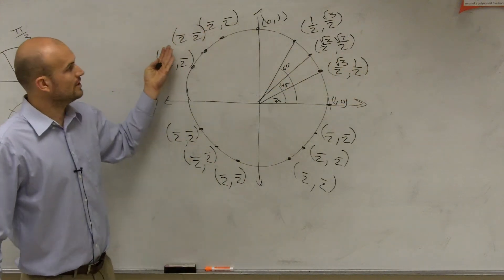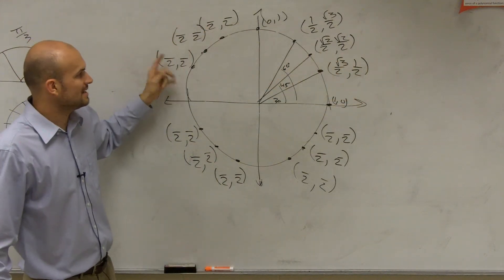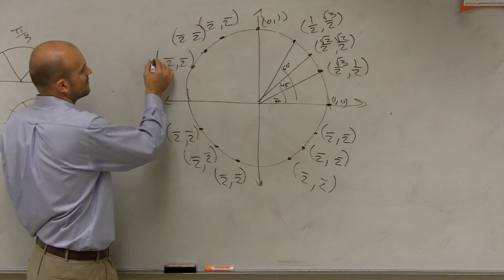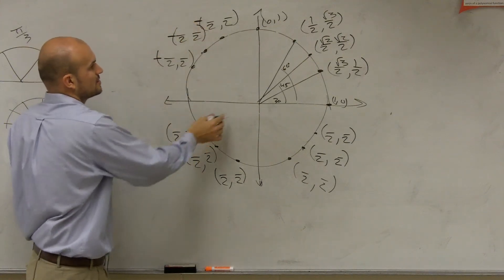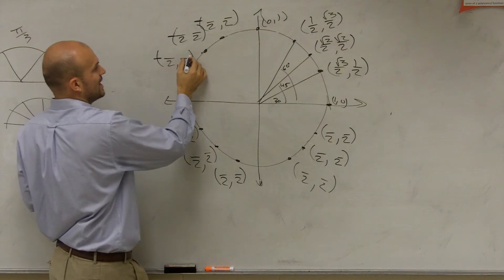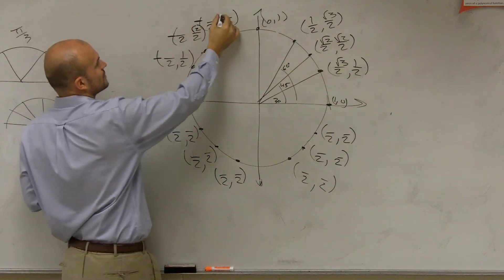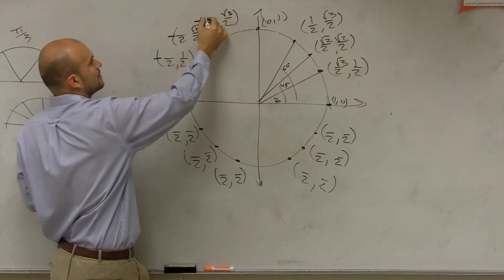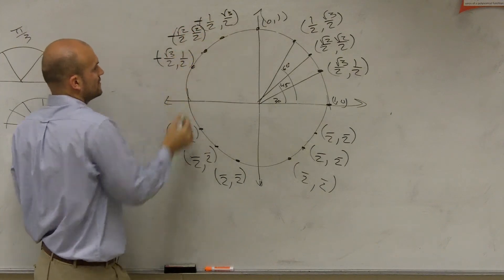Now, as you flip it over, it's the exact same thing, except now what's negative? The x values are now negative, right? So if you look at it, it's still now square root of 1, square root of 2, square root of 3. Square root of 1, square root of 2, square root of 3.